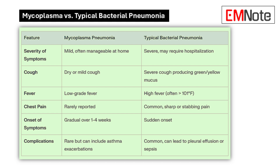Then there's the fever. With mycoplasma, you might see a low-grade fever, but typical pneumonia often presents with a high fever, often exceeding 101 degrees Fahrenheit. That's a big difference in gauging the severity of the infection and deciding how urgently to intervene. Chest pain is rarely a complaint with mycoplasma, but with typical pneumonia, patients often report sharp, stabbing chest pain, especially when they take a deep breath or cough. If a patient comes in with that type of chest pain, it definitely raises suspicion for typical pneumonia.